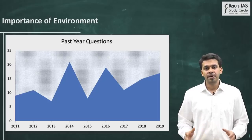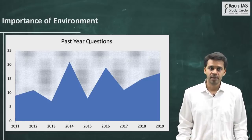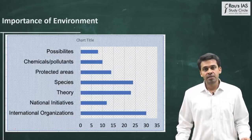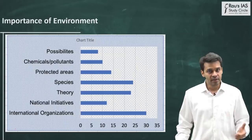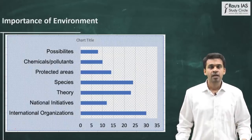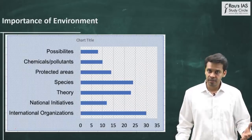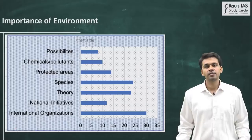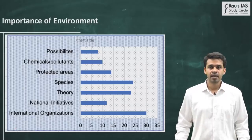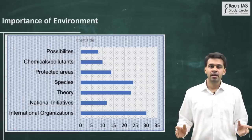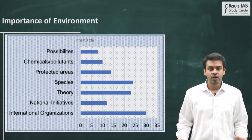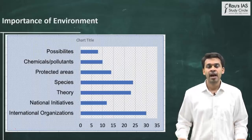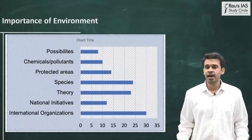Various topics from the environment section which are frequently asked in UPSC Prelims can be broadly categorized. A lot of questions have been asked related to international organizations — for example, Ramsar Convention, UNFCCC, and various other conventions — their functions, India's association with those organizations, and their main objectives. Similarly, a lot of questions have been asked related to national initiatives like National Tiger Conservation Authority and Wildlife Protection Act — all measures the government takes to safeguard environment, wildlife, biodiversity, and pollution levels.